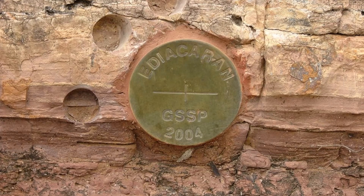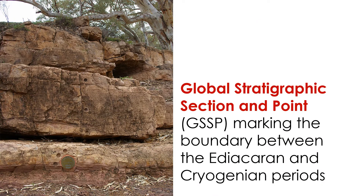Well, geologists do something similar. In geology, golden spikes are driven into strata in order to mark the boundaries between time intervals. More specifically, the spike marks the location of the global stratigraphic section and point for a boundary. The section is the sequence of strata at the golden spike site. The point is the place where the spike is actually located.